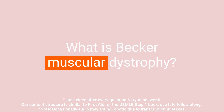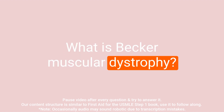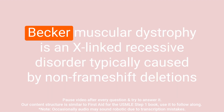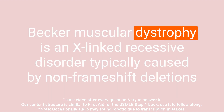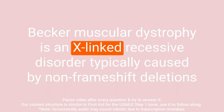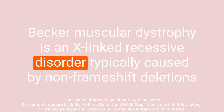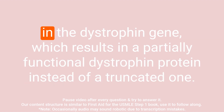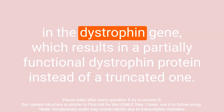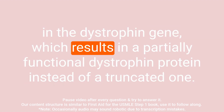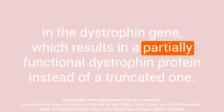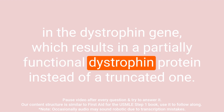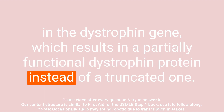Question: What is Becker muscular dystrophy? Answer: Becker muscular dystrophy is an X-linked recessive disorder typically caused by non-frame shift deletions in the dystrophin gene, which results in a partially functional dystrophin protein instead of a truncated one.